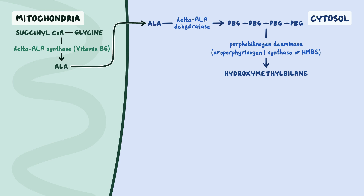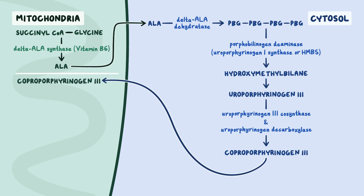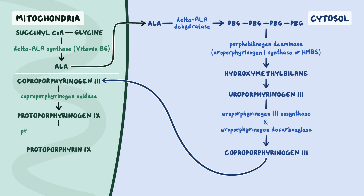Afterwards, hydroxymethylbilane is converted to uroporphyrinogen 3, and catalyzed to coproporphyrinogen 3 via uroporphyrinogen 3 cosynthase and uroporphyrinogen decarboxylase, respectively. Next, coproporphyrinogen 3 is brought back into the mitochondria and converted into protoporphyrin 9 by coproporphyrinogen oxidase, then further converted by protoporphyrinogen oxidase. Lastly, an iron molecule is added to protoporphyrin 9 via the enzyme ferrochelatase. And ten tongue twisters later, we've got a completed heme.